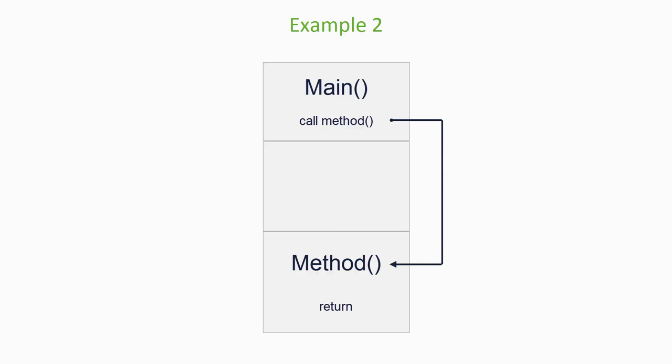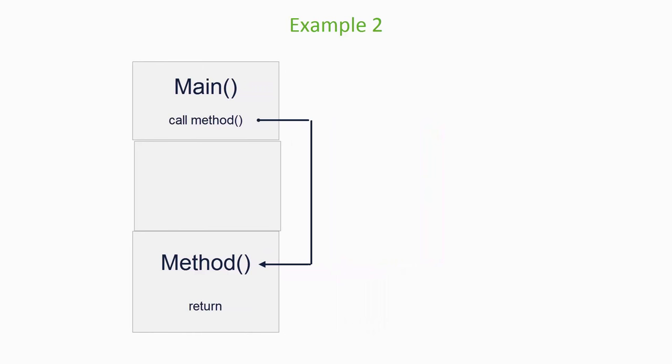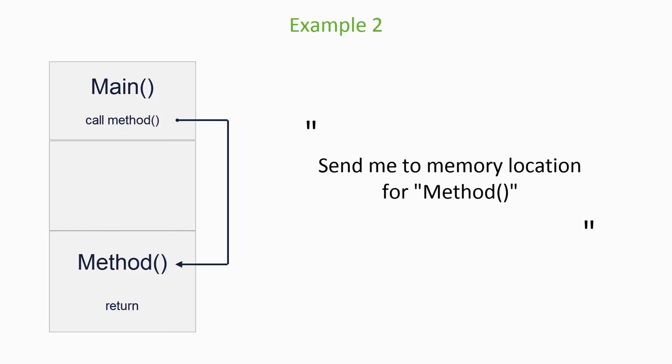When you call a method, the program changes location to the code for that method, then continues executing. There is an alternative approach which is to copy the method's code into the next block of memory and then just continue executing, but this is very unusual, so I'd forget about it immediately. At a low level, this is called a jump. So in the first simple example, our guy at the top of the cliff just has to shout down: can you send me to the memory location for xyz method?